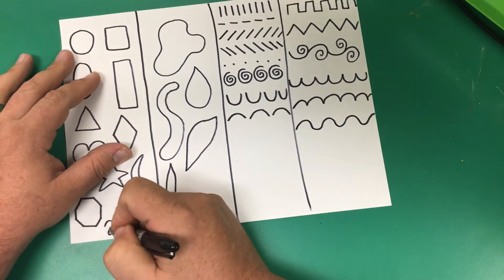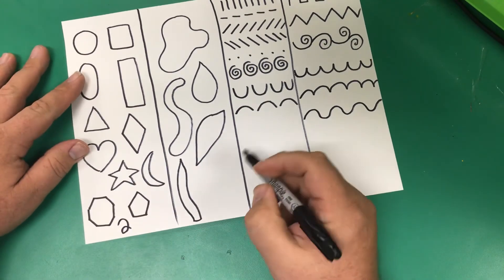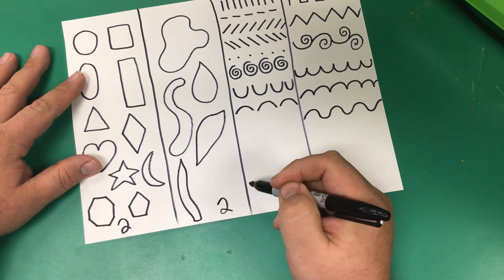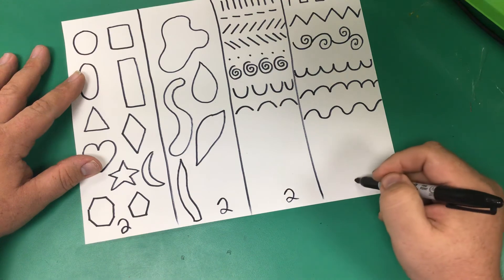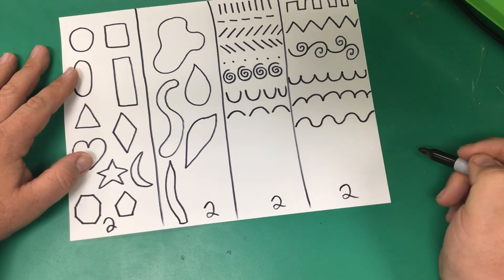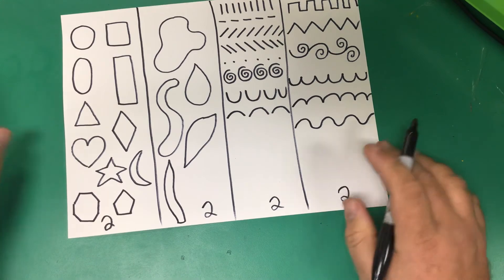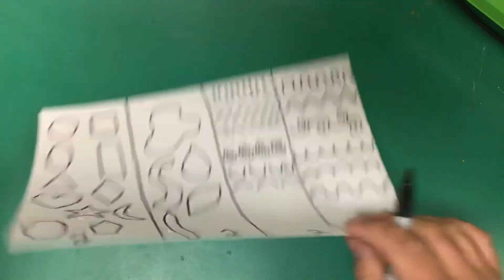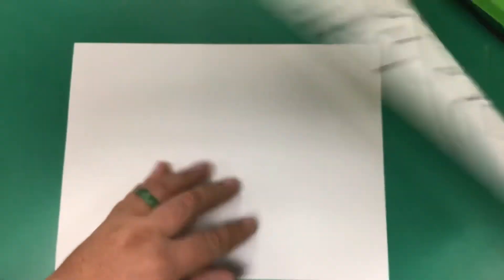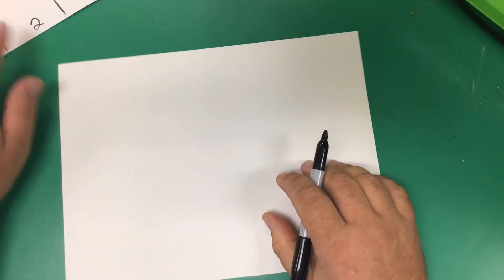All right. You are going to pick two from the geometric, two from the organic, two for the line, and two for the line combinations. And you're going to put this together into a new work of art. So you can either flip your paper over and do it on the other side, or you can start on a clean piece of paper.